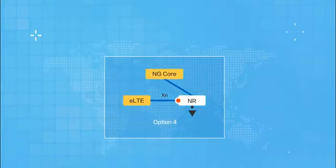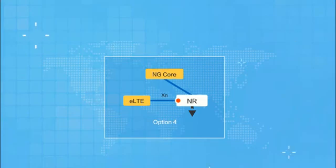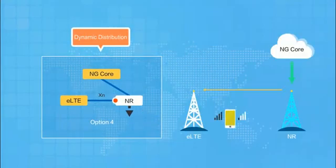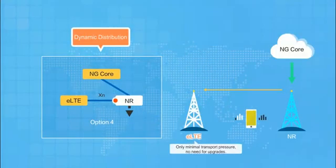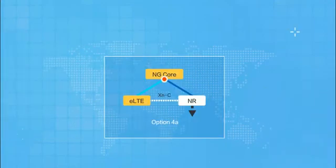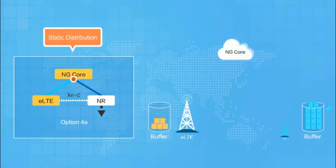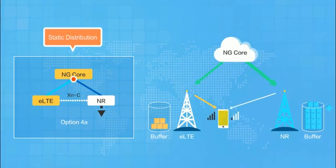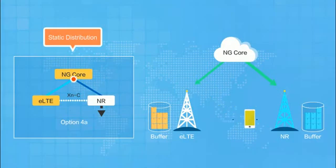In Option 4, the user plane traffic is distributed on the NR base station side dynamically, and does not place significant pressure on existing LTE sites — no large-scale upgrades or reconstruction are required. In Option 4A, the user plane traffic is distributed on the NGC side, but the distribution ratio is static. Traffic is distributed between LTE and NR in a fixed ratio regardless of signal quality, which ultimately results in a user experience that is not as good.